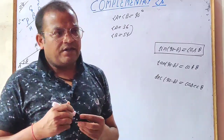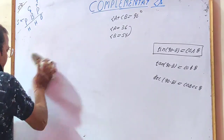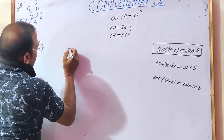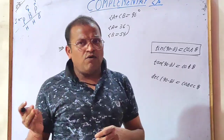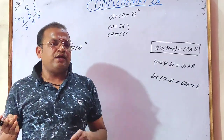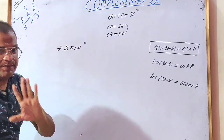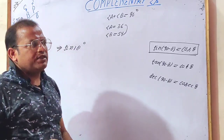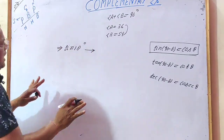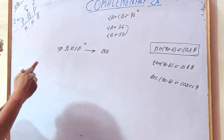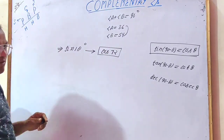Let's do an example to see how to use this. Suppose we are given sine 18 degrees. The angles that normally come in this chapter are 0, 30, 45, 60, 90. If an angle like sine 18 appears, we can convert it. Sine changes to cos and the angle becomes the complement. So in shortcut form, sine 18 equals cos 72, since 90 minus 18 equals 72. However, this shortcut alone will not give full marks.